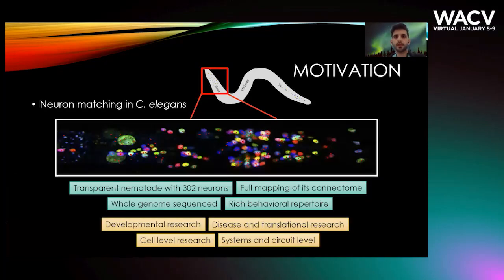To give you a quick bit of background, here is why we're interested in solving this problem. C. elegans is a transparent worm with 302 neurons in its nervous system. Its whole connectome is known, the connectivity between the neurons inside the nervous system, and its whole genome is sequenced.